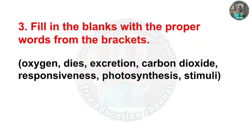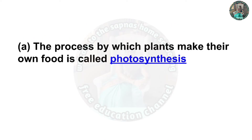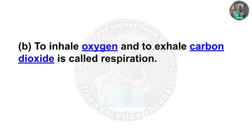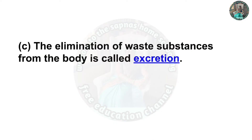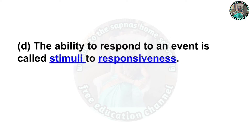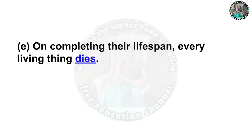Question 3. Fill in the blanks with the proper words from the bracket: oxygen, dyes, excretion, carbon dioxide, responsiveness, photosynthesis, and stimuli. A. The process by which plants make their own food is called photosynthesis. B. Inhaling oxygen and exhaling carbon dioxide is called respiration. C. The elimination of various substances from the body is called excretion. D. The ability to respond to an event is called responsiveness. E. On completing their lifespan, every living thing dies.